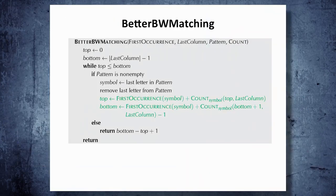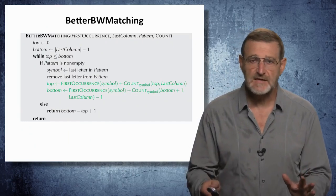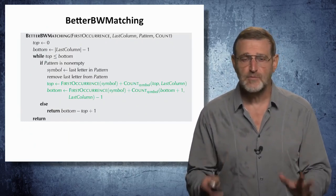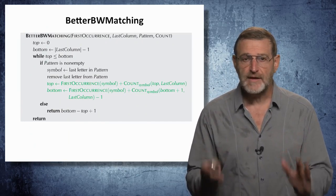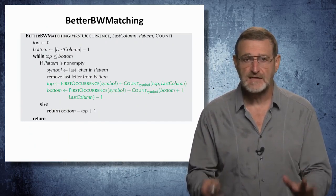And armed with the counter array, we can design a better version of BW matching by substituting four green lines that we discussed before by two green lines that are using the counter array. And as you can see, we don't need anymore to explore every symbol between top and bottom indices in the last column.